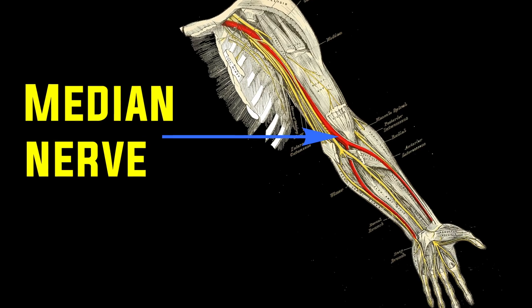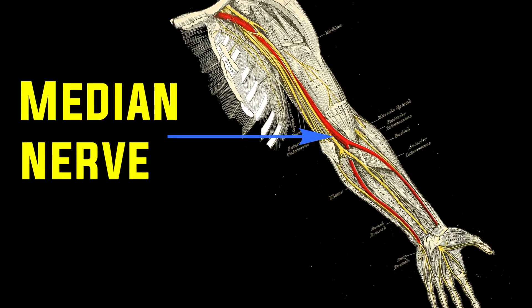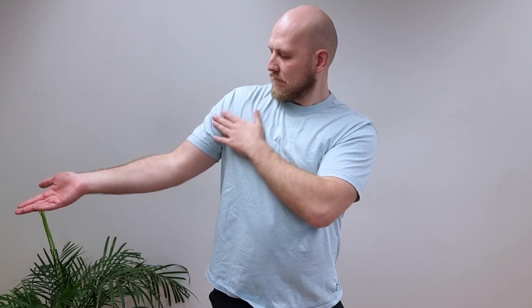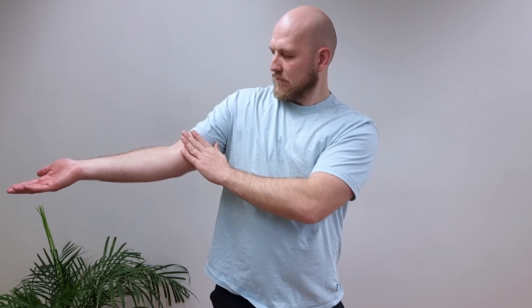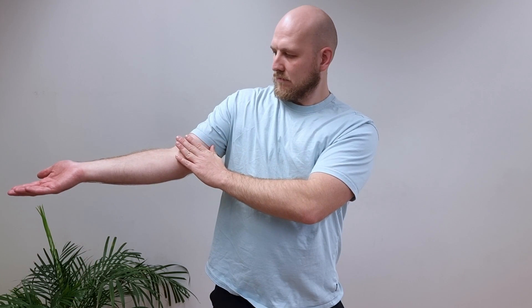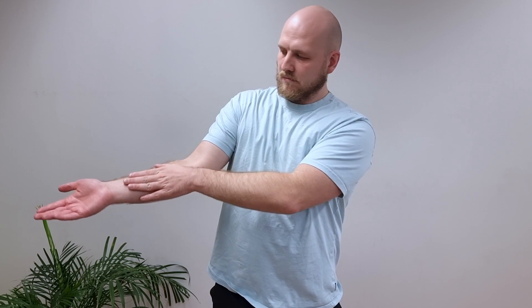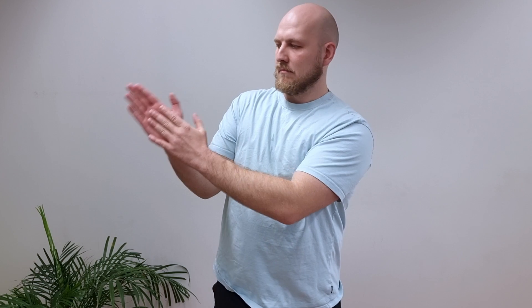First we will show you how the median nerve is tested. This nerve runs from the neck, under the collarbone, from there to the upper arm into the inner parts, and from there to the front of the forearm and into the first four fingers.